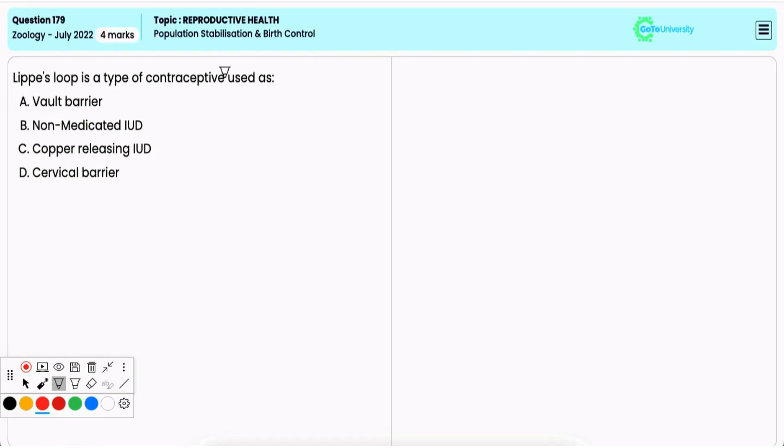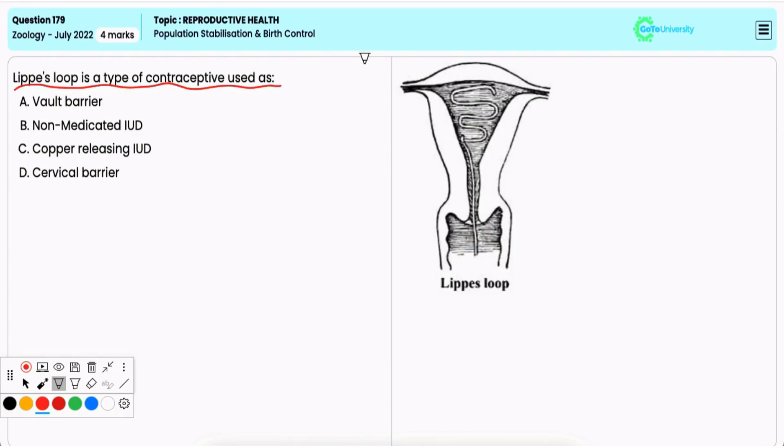In this question you have to identify what type of contraceptive is Lippes loop. Option A: vault barrier. It is incorrect. A vault barrier is a contraceptive device that is placed in the vagina to block sperm from entering the uterus.